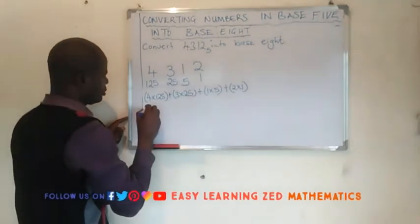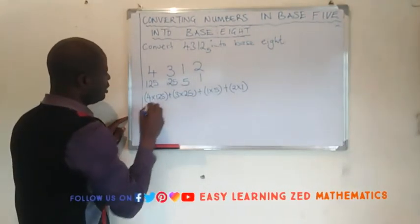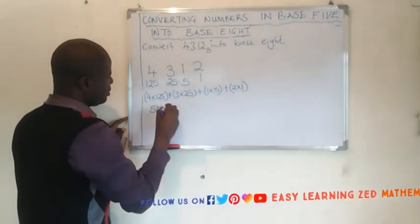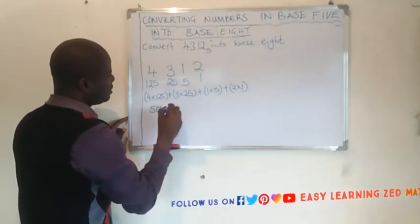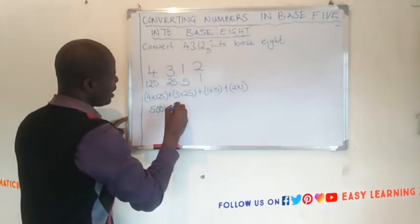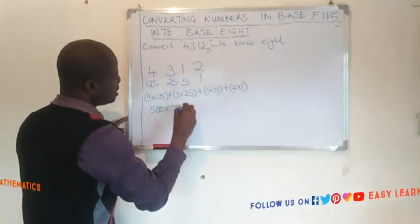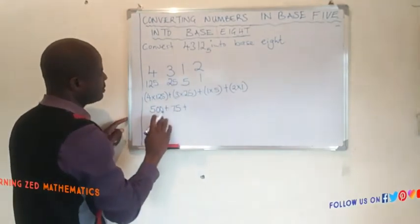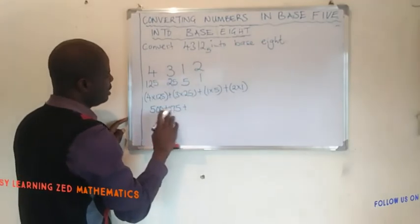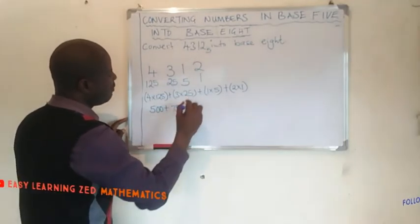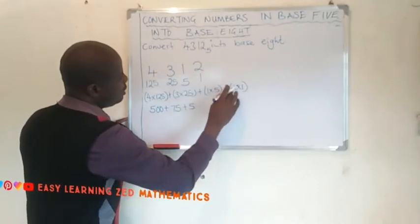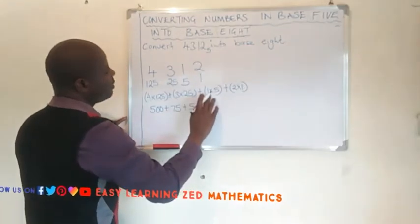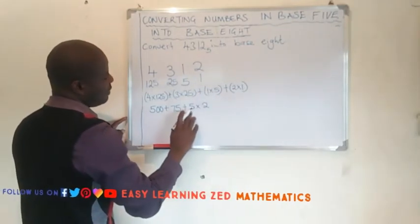4 times 125 gives us 500. 3 times 25 gives us 75. 1 times 5 gives us 5. 2 times 1 gives us 2. So we are adding: 500 plus 75 plus 5 plus 2.